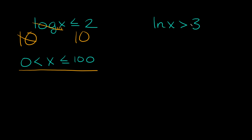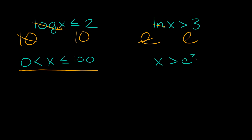Let's try this one: the natural log of x is greater than 3. We're going to get rid of this natural log, and the way you do that is you write a big e. So e raised to this whole thing, and what we do to one side we do to the other. Then the e and the natural log cancel out and we're left with x is greater than e raised to the third power, which is e cubed.